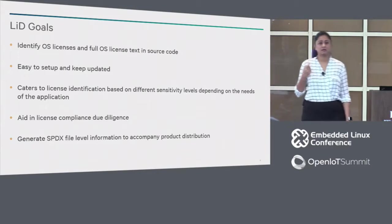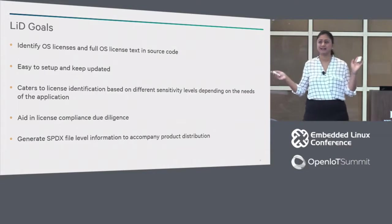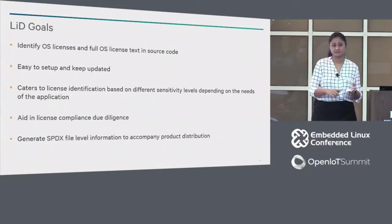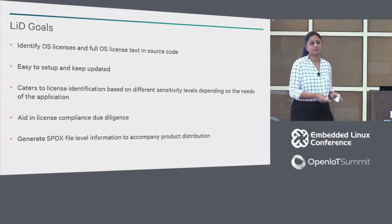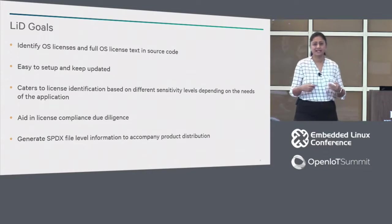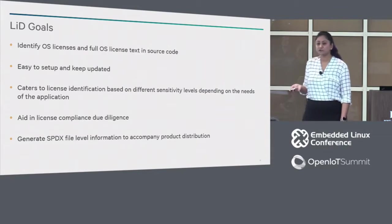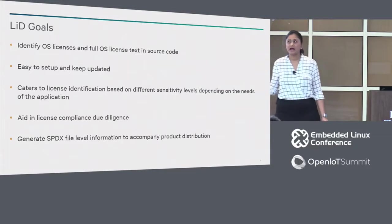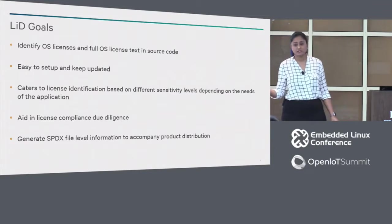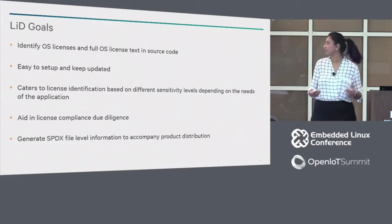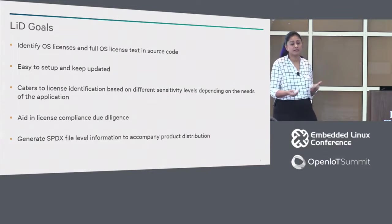Here are the goals with which we built LID — the License Identifier tool. We wanted to catch open source licenses and absolutely everything the standardized SPDX organization publishes as licenses, including headers and exceptions. We wanted to catch full license text in source code. We wanted to keep it easy to set up and update, because to be relevant you want to be able to bring in the latest licenses as recognized by SPDX. We also wanted it to cater to different applications — some sensitive ones prefer false positives to catch everything that smells like a license, while others want only real hits. So we made it tunable to tolerance of different applications, to aid in license compliance due diligence, and to generate SPDX from whatever we found in source code.